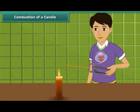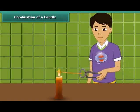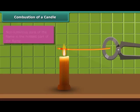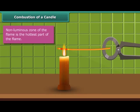Now observe another activity. Rohan is holding a thin long copper wire inside the flame with the help of a pair of tongs. The portion of the copper wire just outside the flame is getting red hot. This indicates that the non-luminous zone of the flame is the hottest part of the flame.